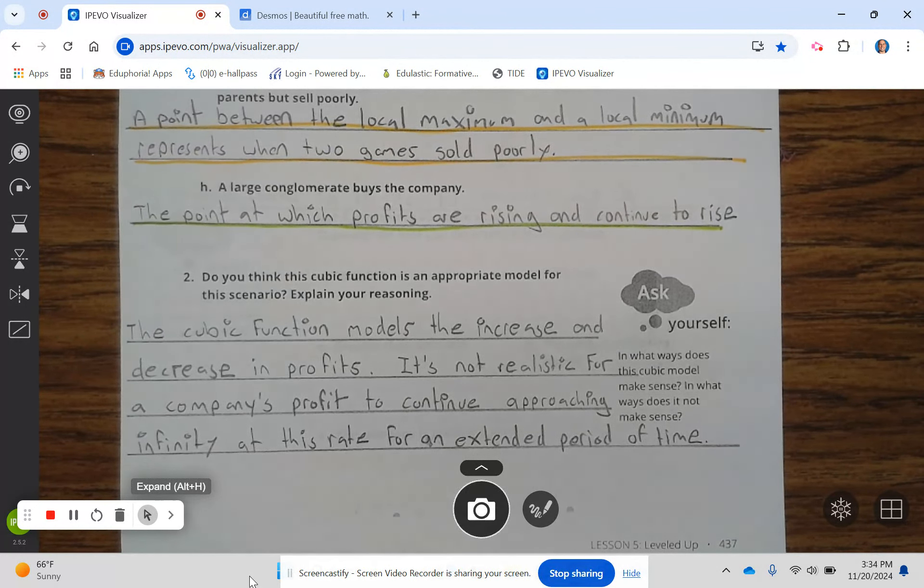2. Do you think the cubic function is an appropriate model for this scenario? Explain your reasoning. The cubic function models the increase and decrease in profits. It's not realistic for a company's profit to continue approaching infinity at this rate for an extended period of time.